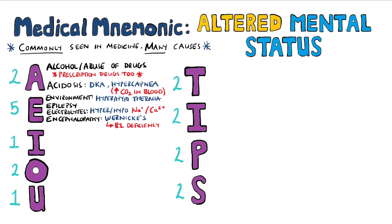Wernicke's encephalopathy occurs often in alcoholics and, more recently discovered, people who have undergone bariatric surgery. Finally, we have endocrine causes such as adrenal insufficiency and thyroid disease.